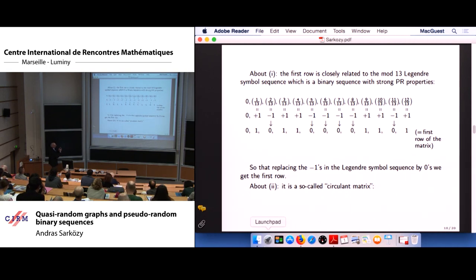So indeed this Legendre symbol sequence becomes a bit sequence, which is exactly the first row of the adjacency matrix of the Paley graph. Now about the second property that we observed before.